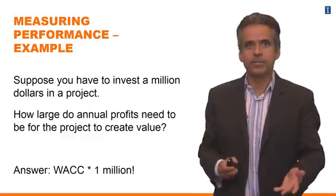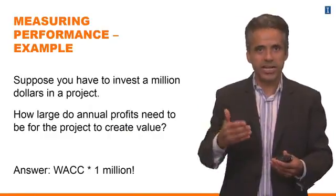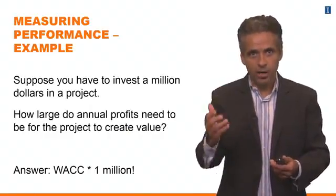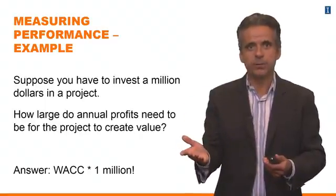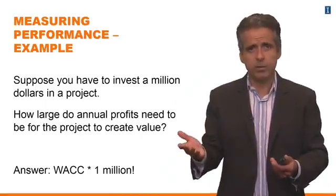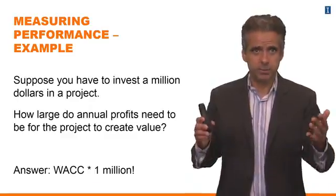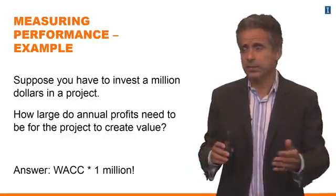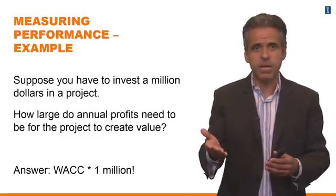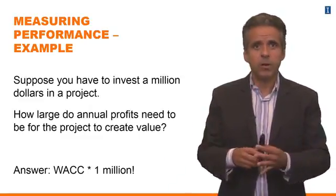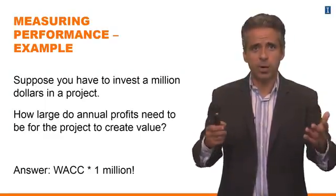The WACC is a percentage return. If you multiply that by a million, you get a dollar value, and this dollar value should be a benchmark for the company. So if it's PepsiCo, we figured out that the WACC should be lower than 6% — 6% is a conservative estimate. What you would do is multiply 6% times 1 million to figure out the minimum amount of annual profit that a PepsiCo project should generate.